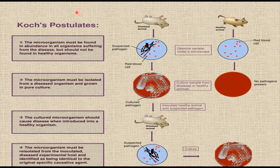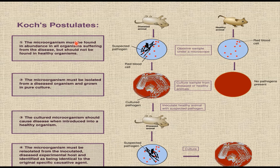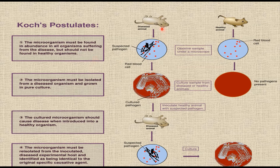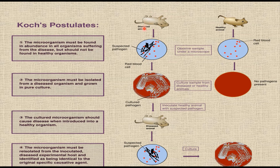Koch conducted an experiment to find out and explain the germ theory of disease, working on anthrax bacillus. In order to find the cause of the disease, he injected the blood of a dead sheep into laboratory mice, because he did not want to kill the sheep, so he used mice as experimental animals.